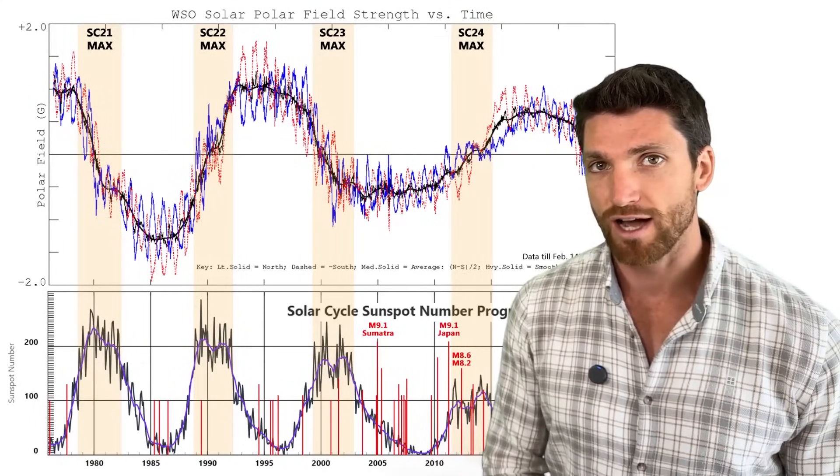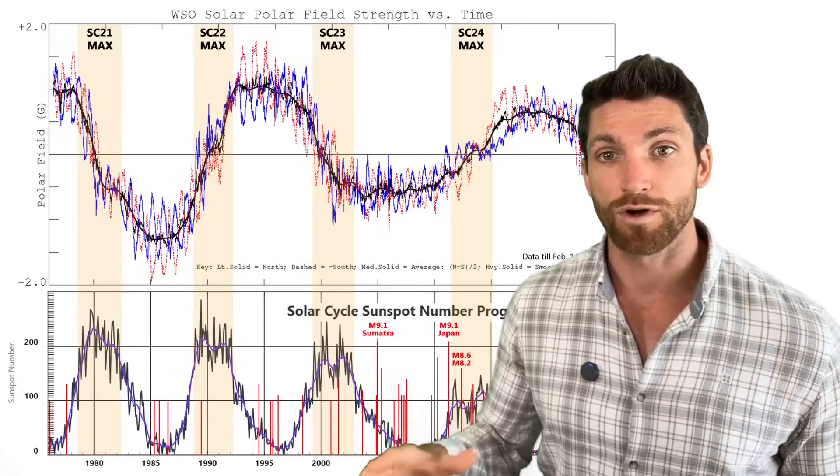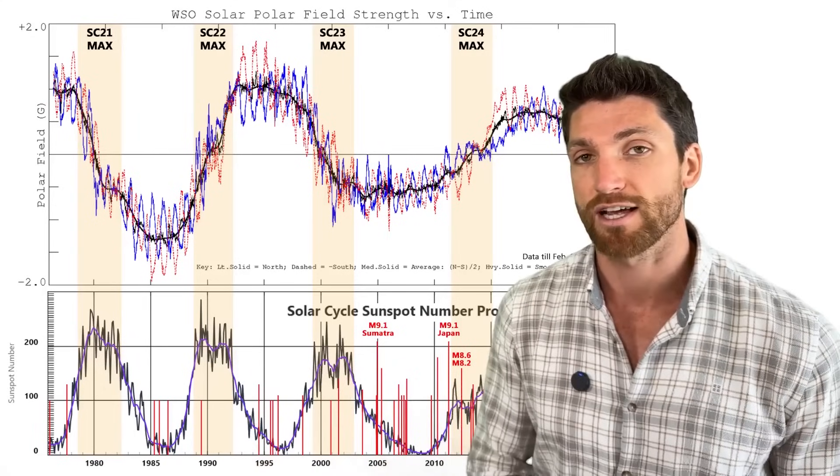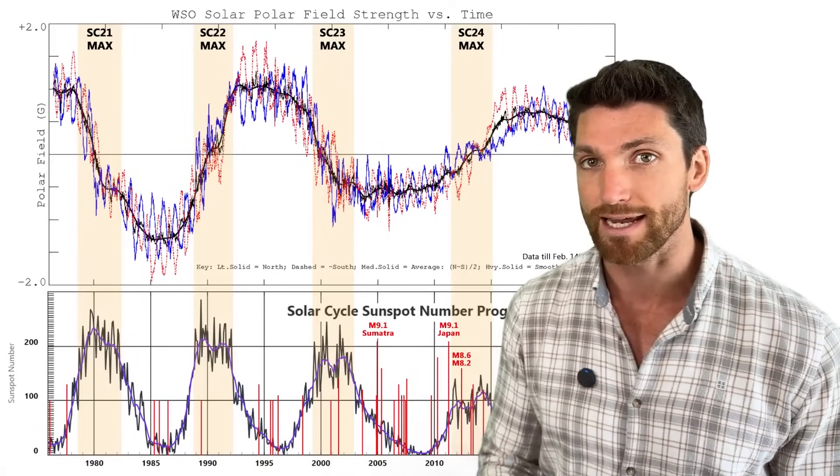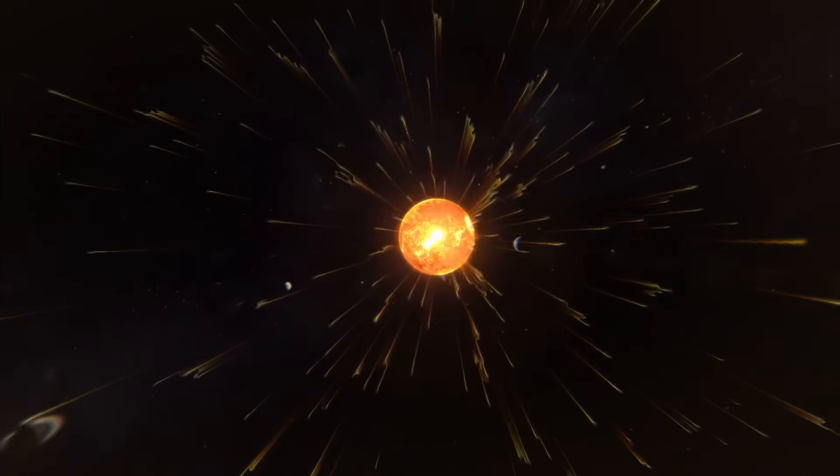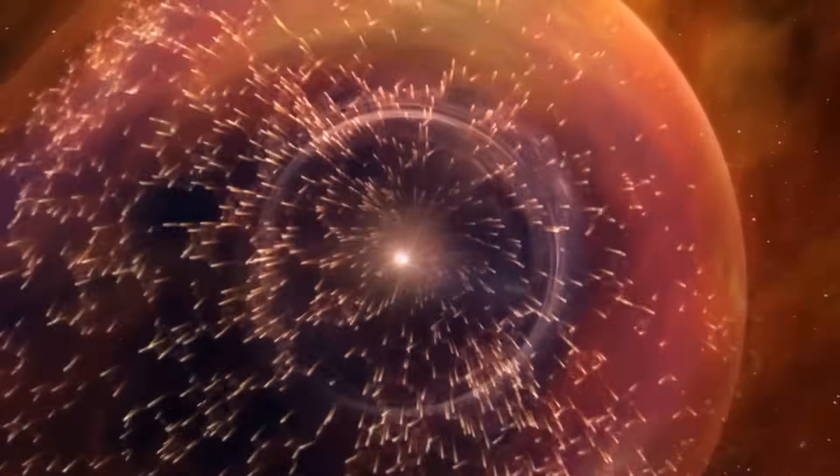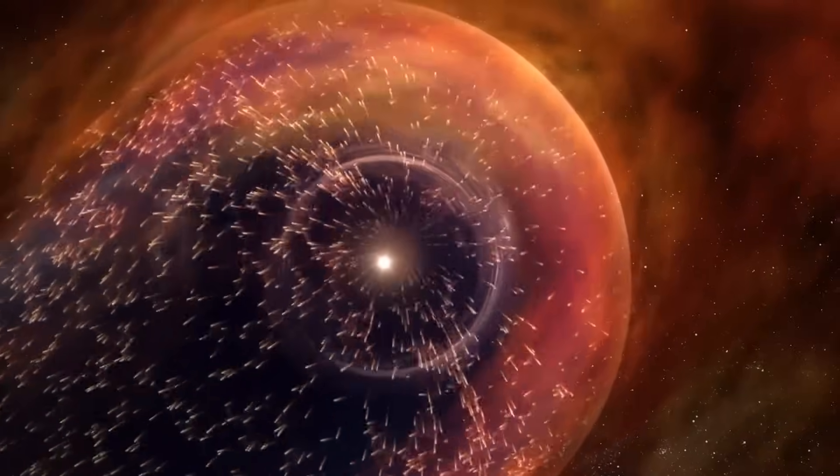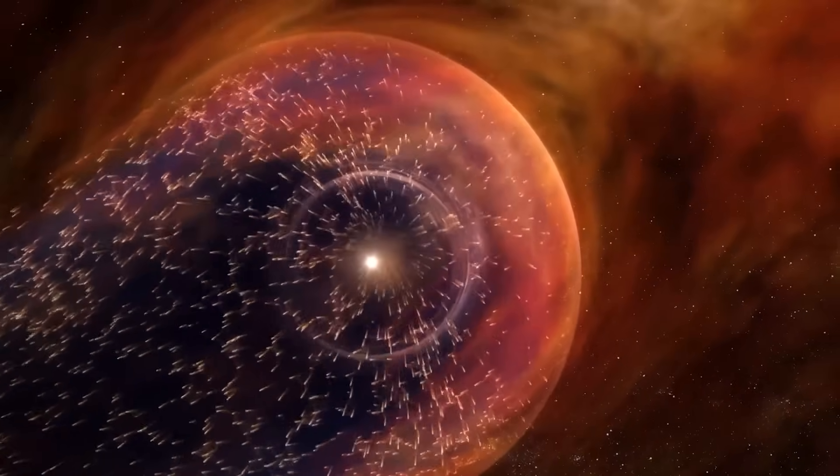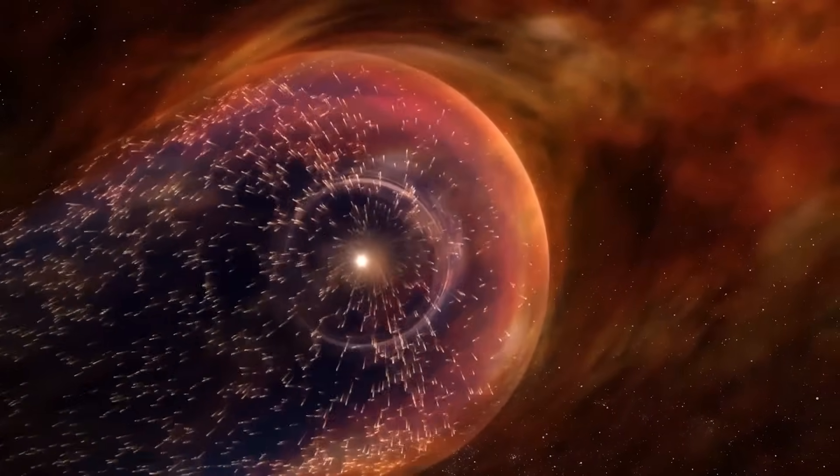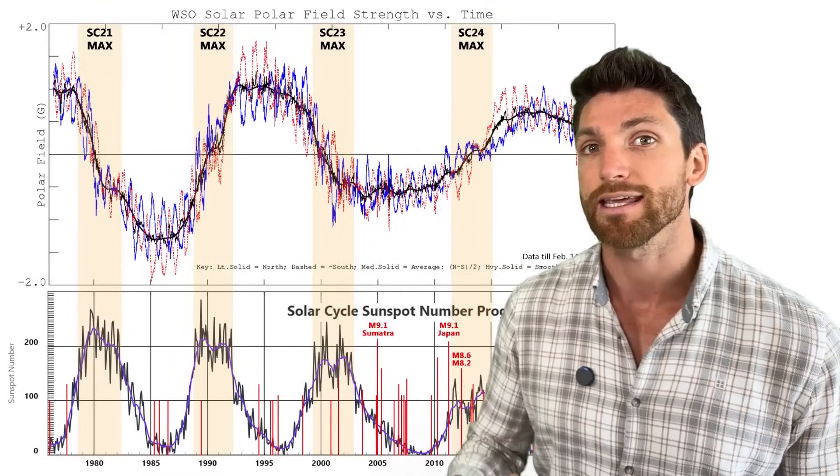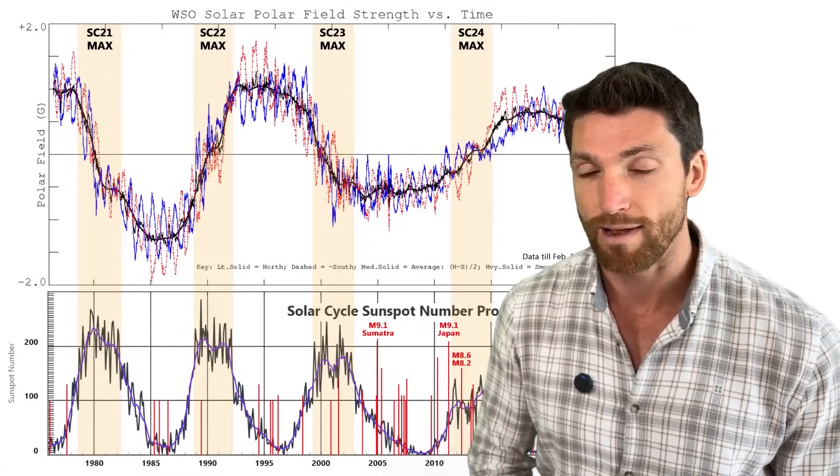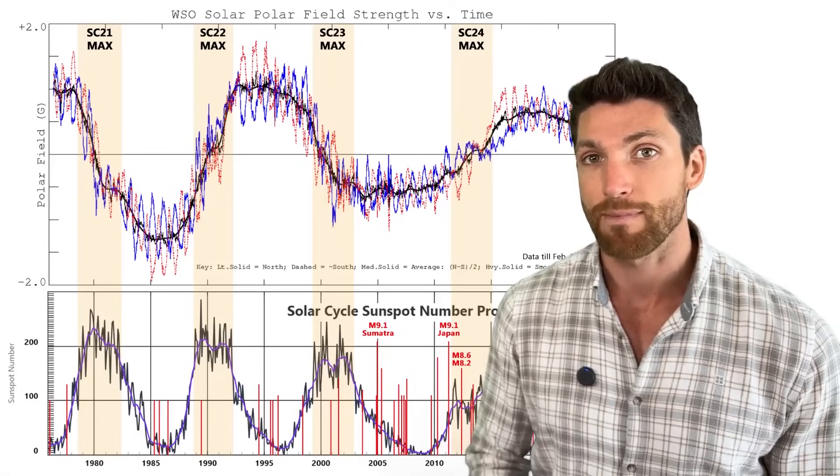Looking across a longer time frame though, more than just one solar cycle but many solar cycles, we see that the magnetic field of the sun in fact is weakening. And this has perhaps some interesting implications as it relates to, for example, our heliosphere, its ability to protect us from interstellar plasma and galactic cosmic rays. And also there's an interesting connection between the strength of the solar magnetic field and high magnitude earthquakes.